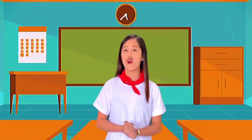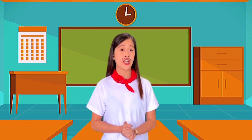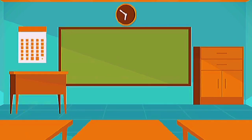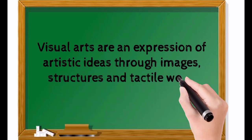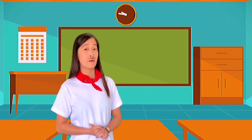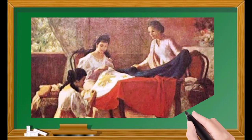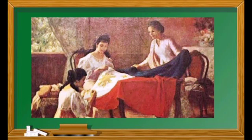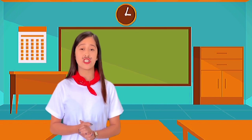The first contemporary art form is visual art. It is used to describe a wide array of artistic disciplines that are appreciated primarily through sight. Visual arts are an expression of artistic ideas through images, structures, and tactile work. Fernando Amorsolo's painting of the making of the Philippine flag is an example of visual arts. He made this painting to show citizens how the Philippine flag was made and to remind them of traditions and customs that had faded. Whang-Od's tattoos are also considered visual arts — she is the Philippines' oldest mambabatok, or traditional Kalinga tattooist.